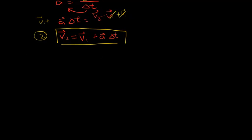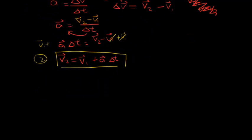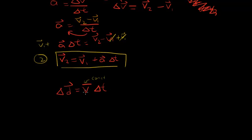Now the third derivation. I'm going to use the first equation to derive the third one. Remember the first one: Δd equals constant velocity times time. The straight line over the v denotes constant velocity. But what if you have a non-constant velocity? How can you use this equation? Well, we can define constant velocity as the average velocity. And when we have the average of two values, v1 and v2, we add them and divide by two.